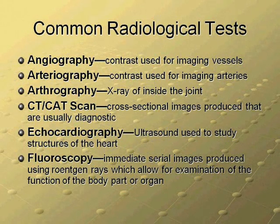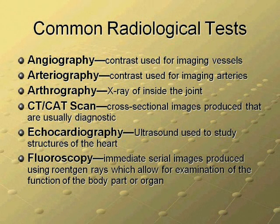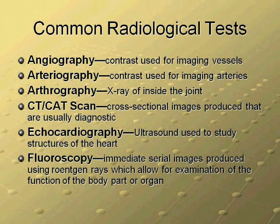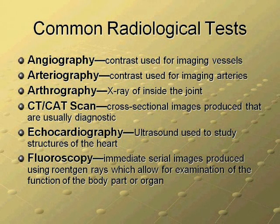Numerous procedures are covered in the radiology section. One of these procedures is the CT or CAT scan, which is a view of a single plane of the body attained by blurring out all other layers. The codes for CT scans are found under the body area that is being scanned. Another study is the fluoroscopy, which provides live images and allows the study of the function of the organ as well as the structure of the organ.